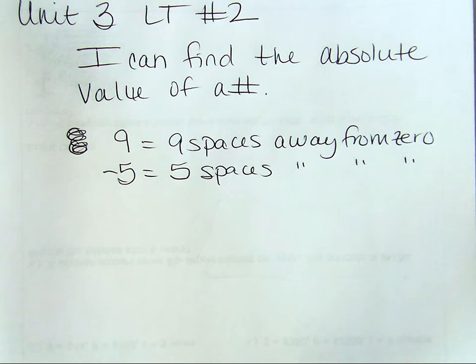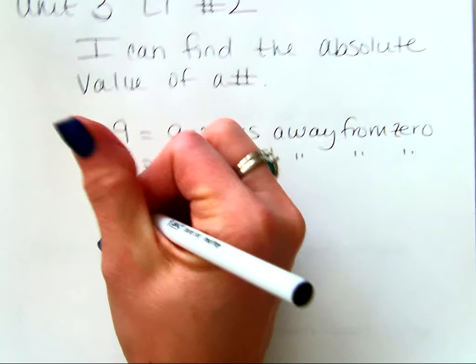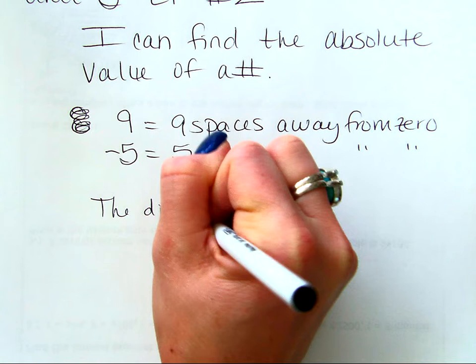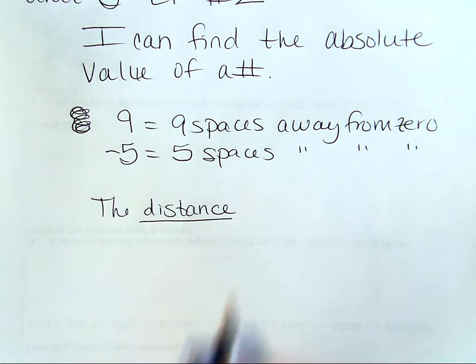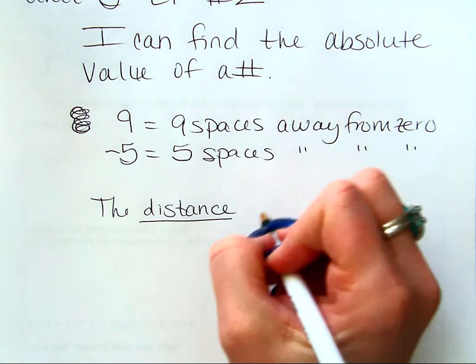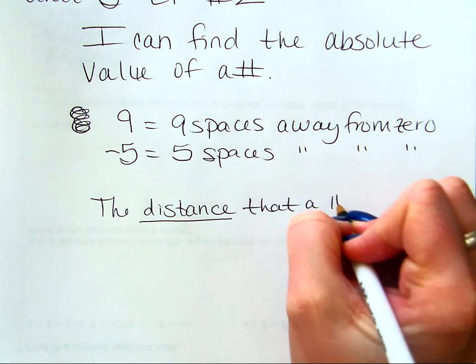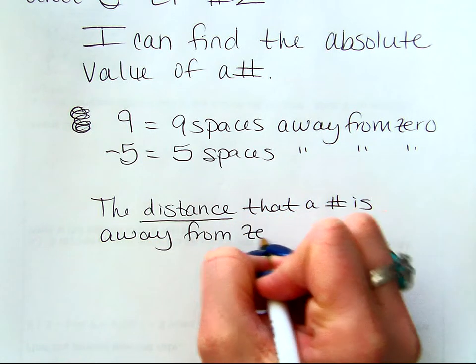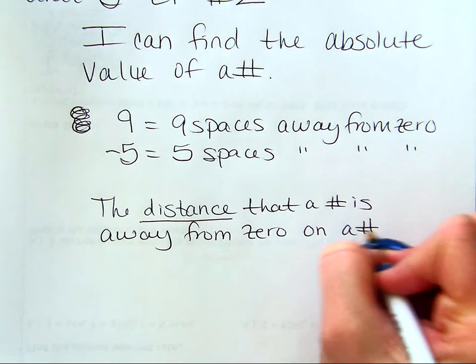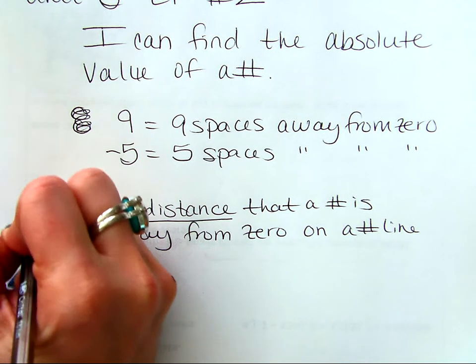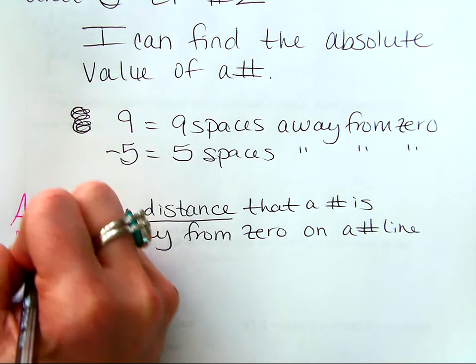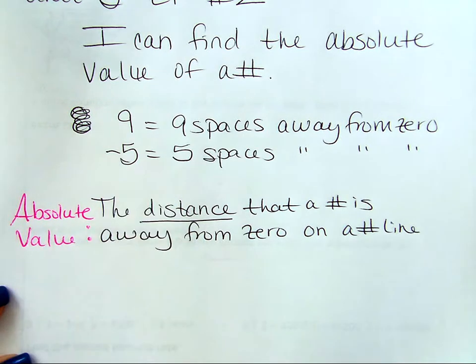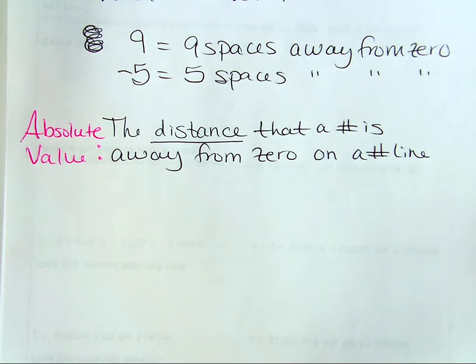So, we just did a little experiment with absolute value. Because you know what the definition of absolute value is? I want you to write this. It's the distance, and distance is a pretty important word, so I want you to underline it, because we're going to talk about that in a minute. That a number is away from 0 on a number line. And that is the definition of absolute value.